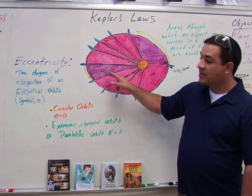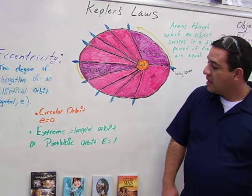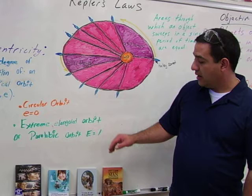Eccentricity is the degree of elongation of elliptical orbits, and that's symbolized by the symbol E. A circular orbit would have an eccentricity of zero, while an extreme elongated orbit would have an eccentricity of one.